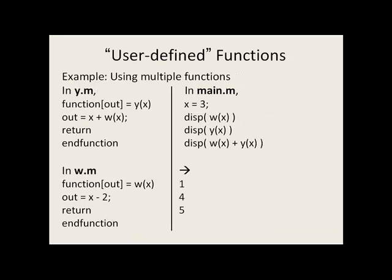We can have functions within functions and call multiple functions within a program. Here we have x equal to 3. Let's calculate w of 3. So 3 is passed to x in the w function. We have 3 minus 2 is 1, and that's returned as output and displayed on the screen: 1 is displayed.